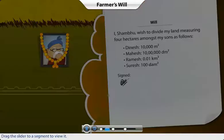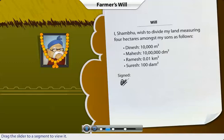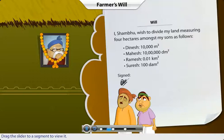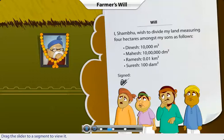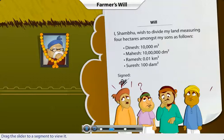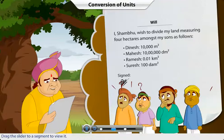After his death, Shambhu's will was read. As per the will, his land was to be divided amongst his four sons in the manner shown. His sons read the will and were confused. They thought it was unfair that their father had not divided the land equally. They asked a wise man in the village to explain their father's will.